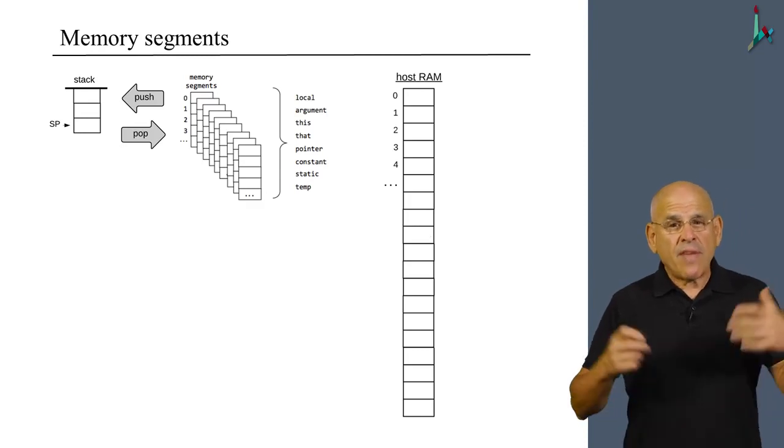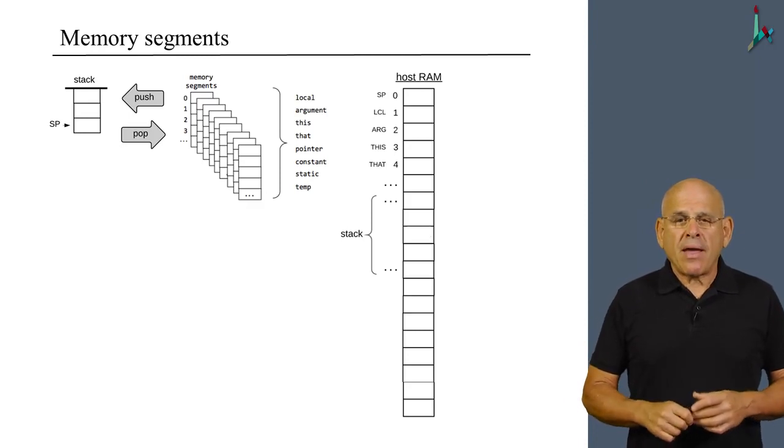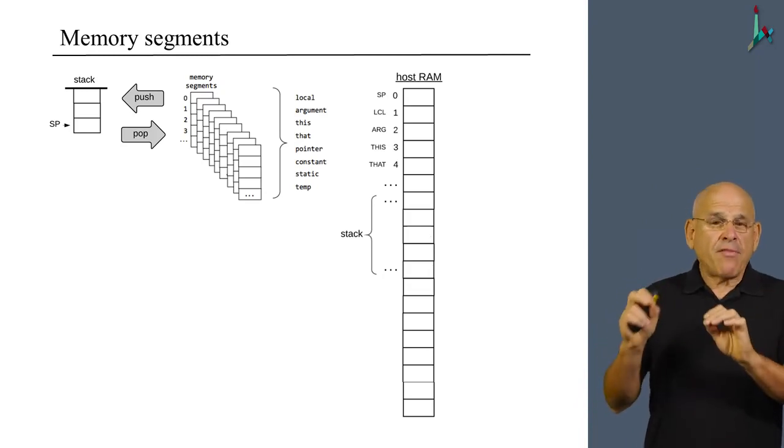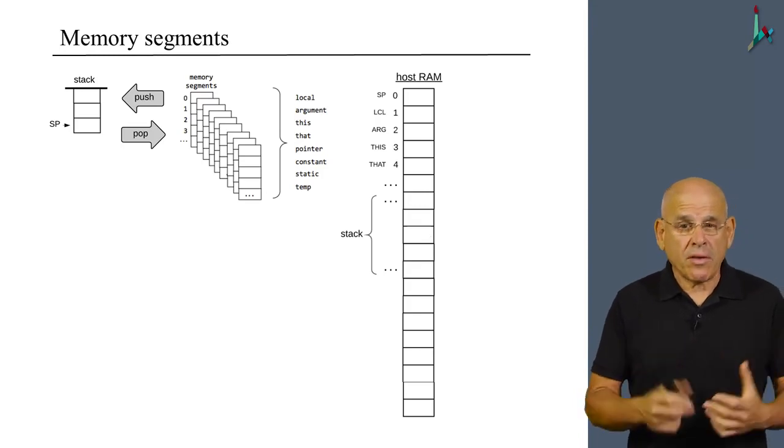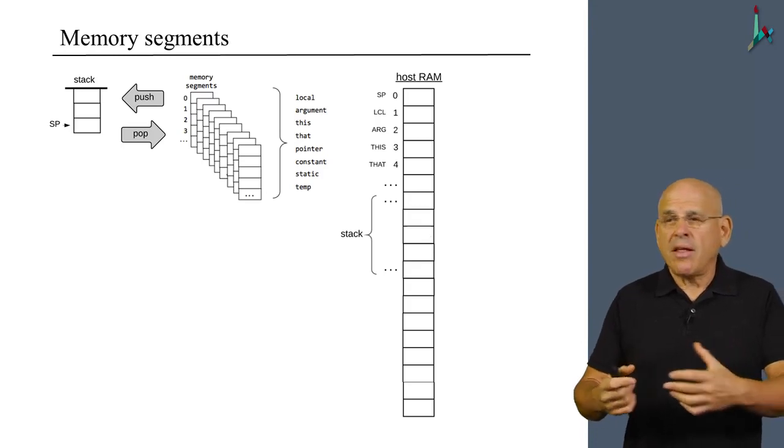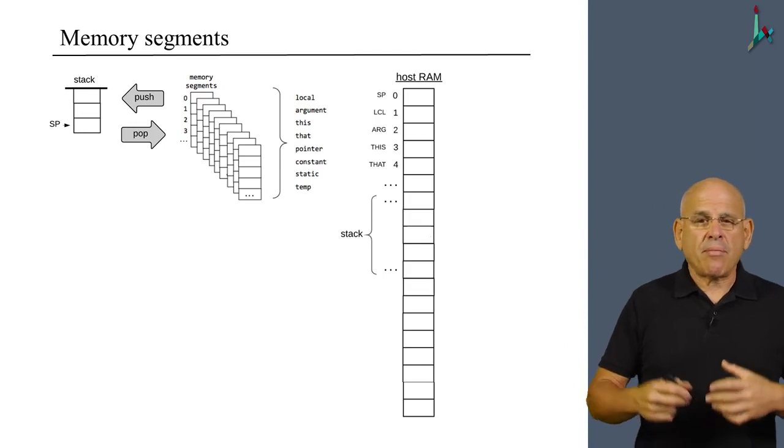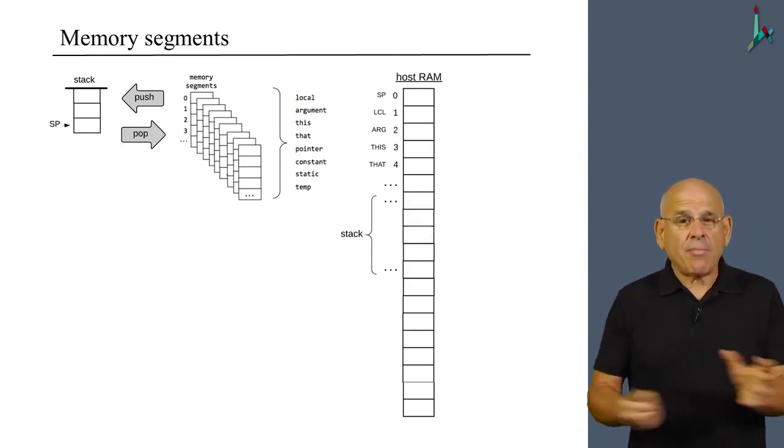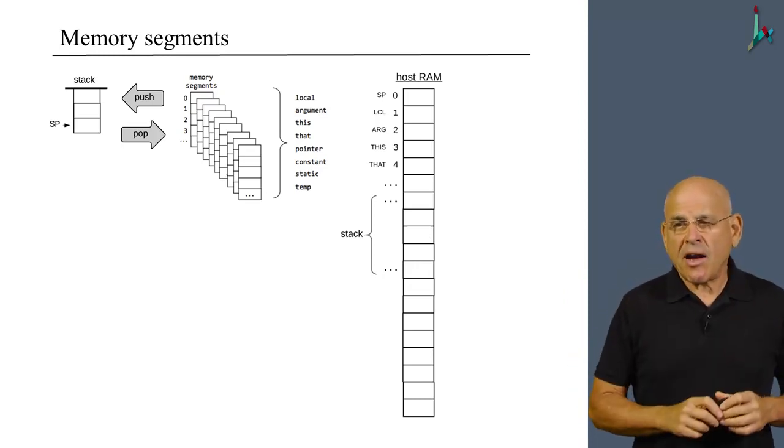To remind you, the VM implementation deals with this mapping by looking at the RAM in a very specific way. First of all, the first five words in the RAM are used as very important pointers that hold the current value of the stack pointer, the current value of the base address of the local segment, the base address of the argument segment, this and that. All these segments refer or belong to the VM function which is currently running.